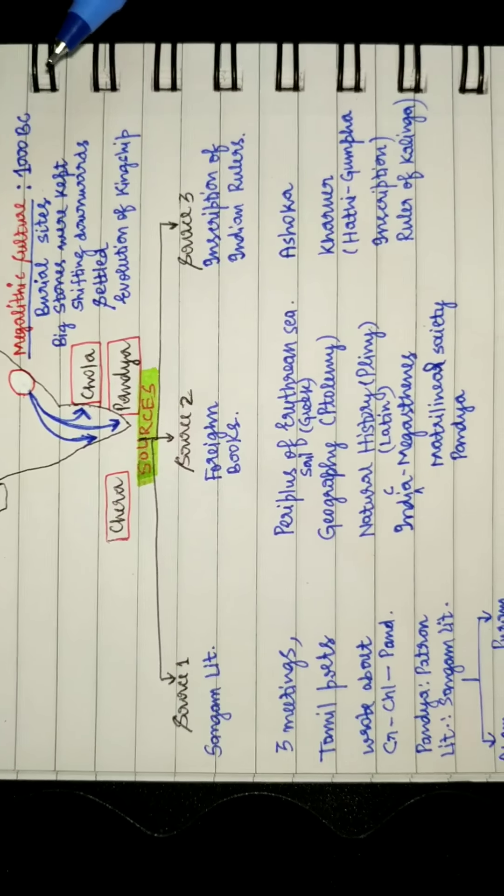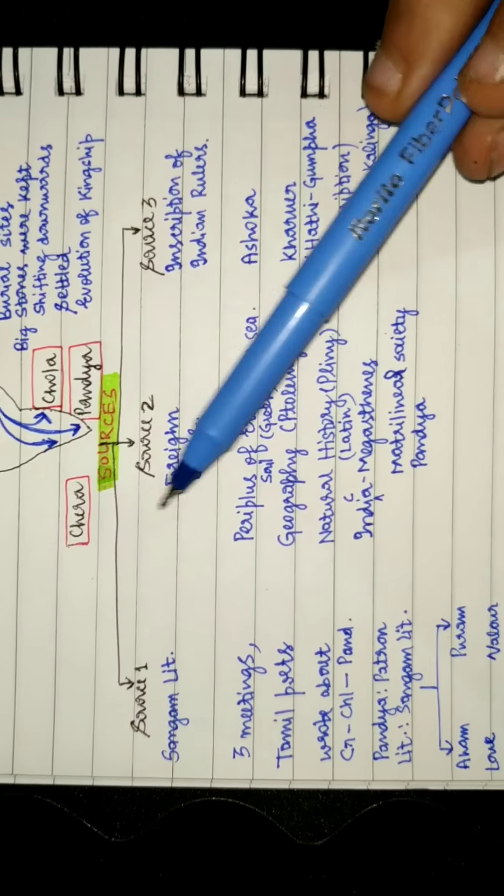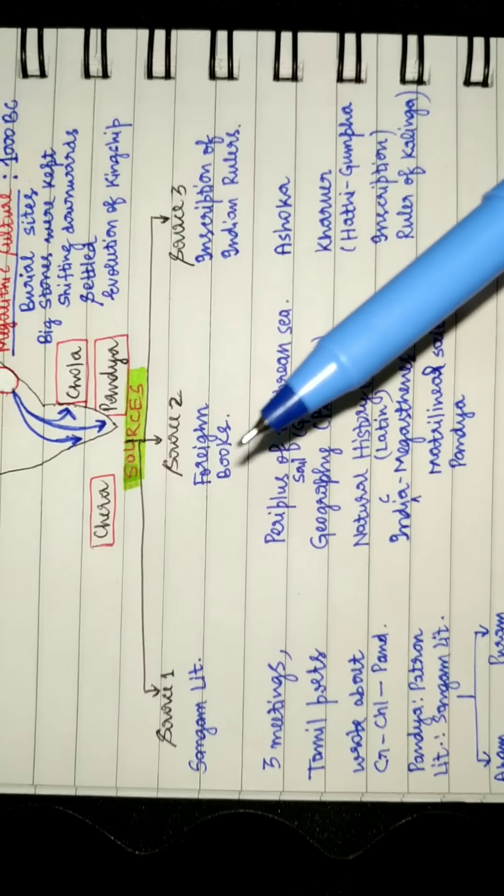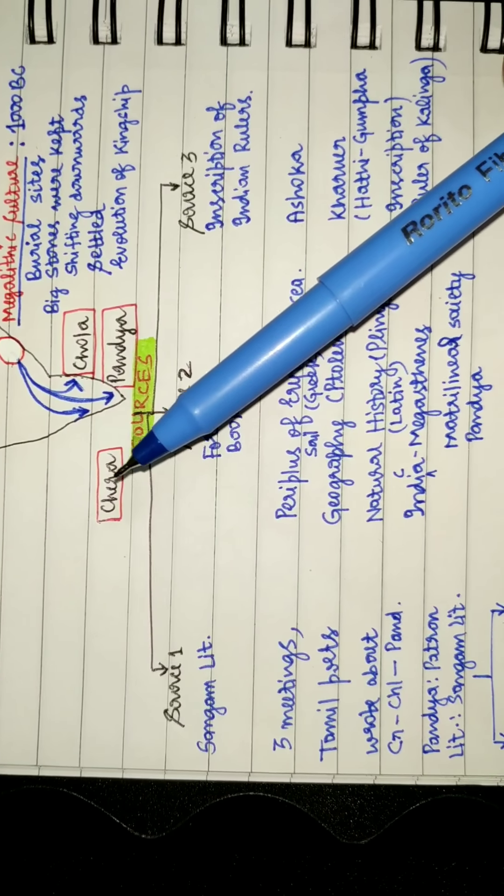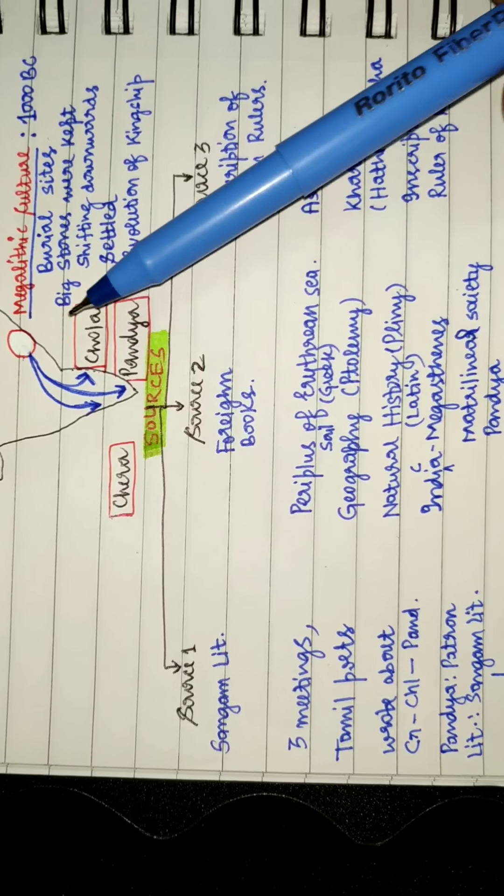So that's three sources which mention Chera, Chola, and Pandya. In the next video we'll individually see about Chera, Pandya, and Chola. Thank you.